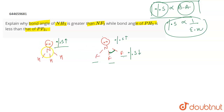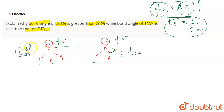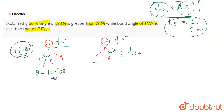In NH3, the lone pair has a greater percentage s-character, and hydrogen is not an electronegative species, so hydrogen is not going to affect the bond angle. There are lone pair–bond pair repulsions present here, and the bond angle (θ) in NH3 is 107 degrees 28 minutes.